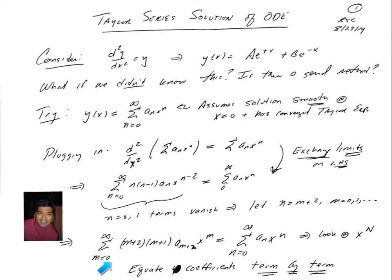If we rewrite the left-hand side, then the left-hand side becomes the sum m going from 0 to infinity, m plus 2 times m plus 1, a_{m+2}, x to the n equals the right-hand side, sum n going from 0 to infinity, aₙ, x to the n.